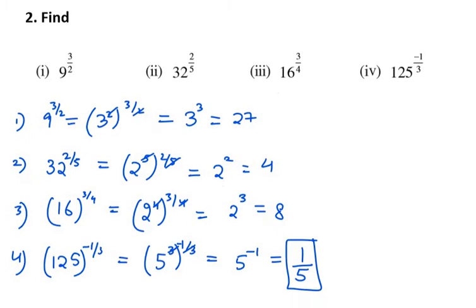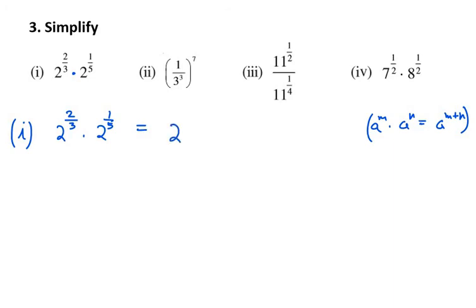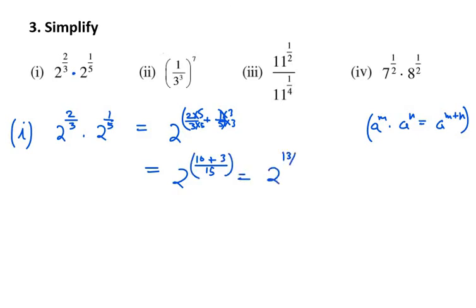Moving on to Question 3, we need to apply laws of exponents. In the first part the bases are the same and we have a multiplication sign. Using the law a^m times a^n equals a^(m+n), we add the exponents: 2 over 3 plus 1 over 5. Taking the LCM of 15, we get 10 over 15 plus 3 over 15, which gives 13 over 15. So the answer is a raised to the power 13 over 15.